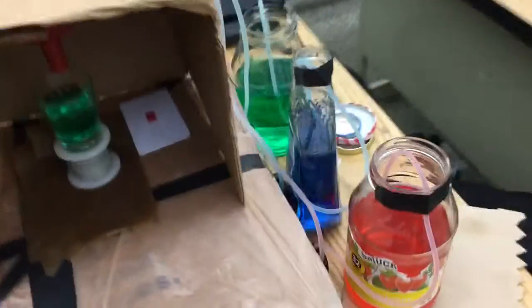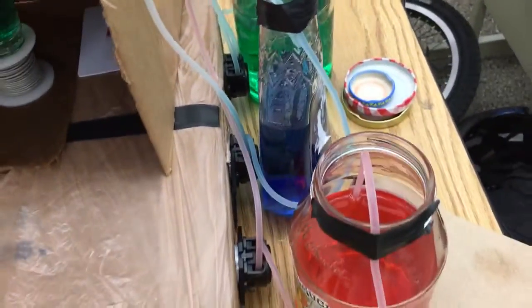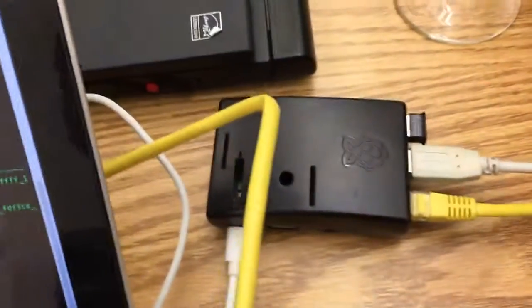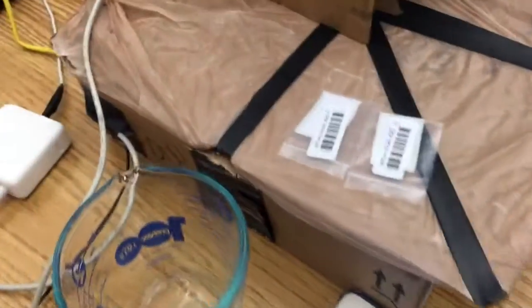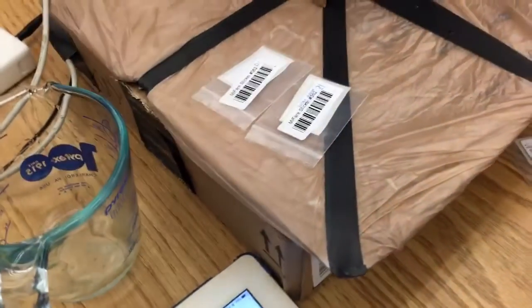So here are the colors we have, all the motors you can see. We got it connected to the Raspberry Pi which is handling Bluetooth, and inside this box we have the motor control circuit and an Arduino.